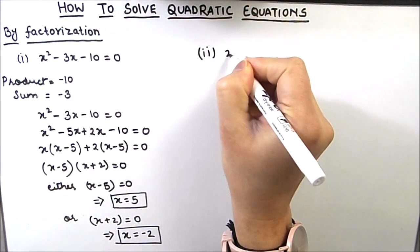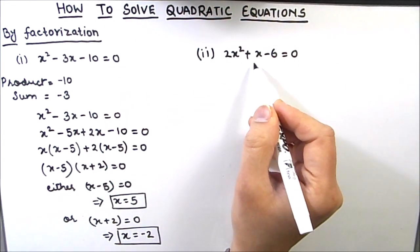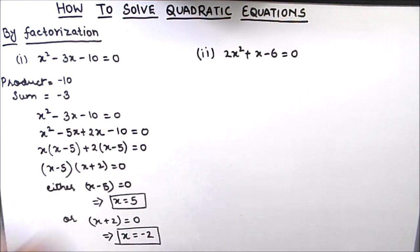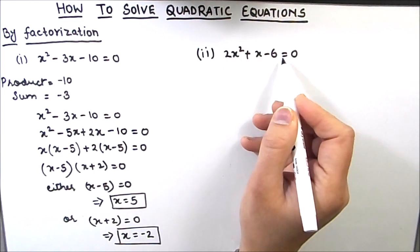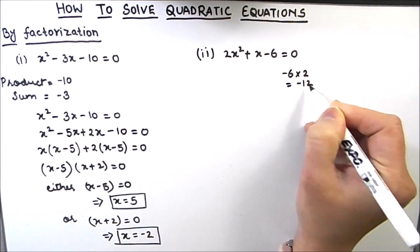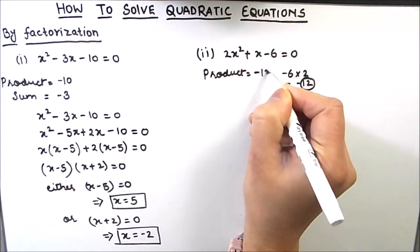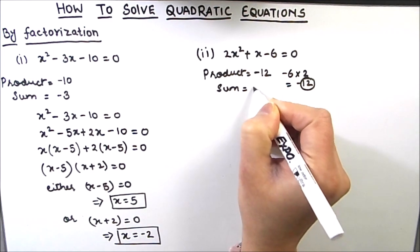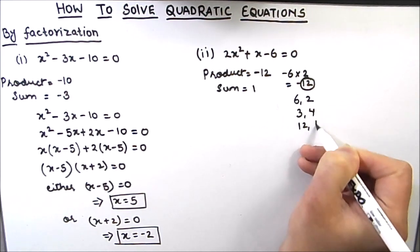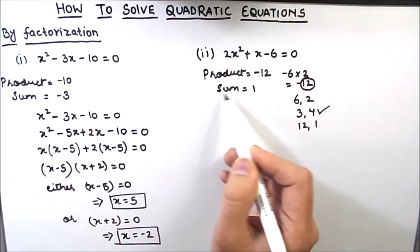Our second example is 2x squared plus x minus 6 equals 0. The difference from the first equation is that the coefficient of x squared is 2, not 1. First we take the product of the coefficient of x squared and the constant: 2 times negative 6 equals negative 12. We need factors of 12 such that their product is negative 12 and their sum is 1, the coefficient of the middle term x. The factors of 12 are 6 and 2, 3 and 4, and 12 and 1. The only pair satisfying product negative 12 and sum 1 is 3 and 4.